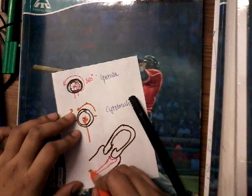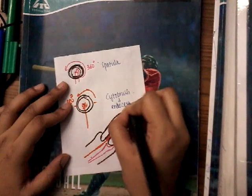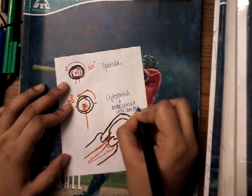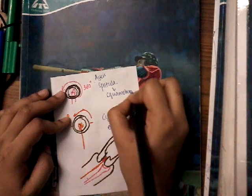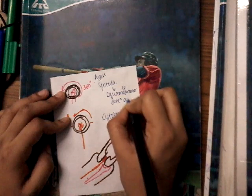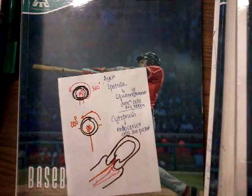The cyto brush goes into the endocervix, and the cells of the endocervix are picked up. This is the major difference: in the cyto brush, cells of the endocervix are collected, whereas with the iron spatula, only the cells of the squamocolumnar junction are taken.